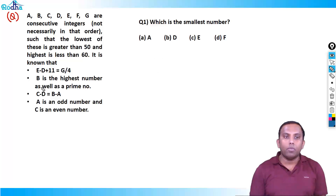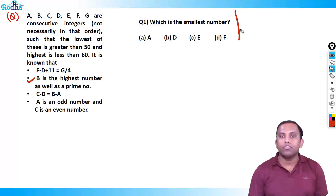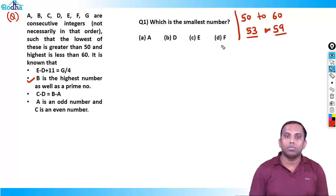Now, B is the highest number as well as a prime number. So in between 50 to 60, what are the prime numbers? In between 50 to 60, 53 and 59 are the only prime numbers.